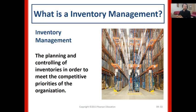Every business would like to manage their operations and processes efficiently to become competitive in the industry. So the planning and controlling of inventories should also lead us to be competitive according to our competitive priorities such as quality, flexibility, cost, and speed. These are the four main traditional competitive priorities for companies.